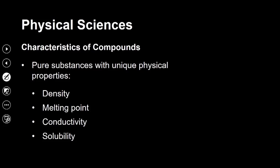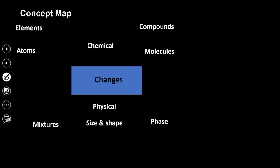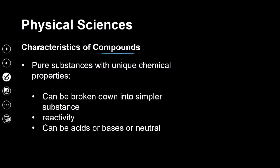Compounds are also pure substances with unique physical properties — density, melting point, conductivity, and solubility. Importantly, compounds consist of atoms of different elements that are chemically bonded to each other. Unlike elements, compounds can be broken down into simpler substances — from complex to simpler. Compounds can also be classified as acids, bases, or neutral substances.